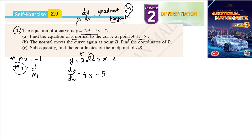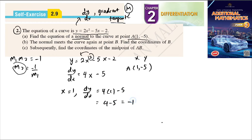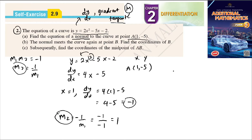We need to find the gradient at point A(1, -5), where x = 1 and y = -5. Substituting x = 1 into dy/dx: 4(1) - 5 = 4 - 5 = -1. So the gradient of the tangent is -1. Since we want the normal, the gradient of normal m2 = -1/m1 = -1/(-1) = 1.